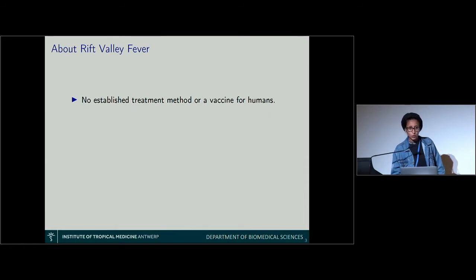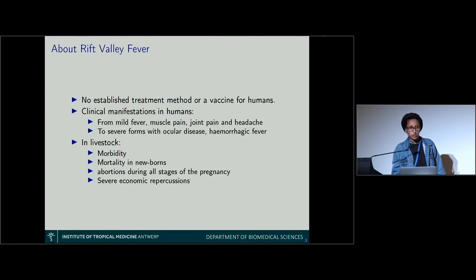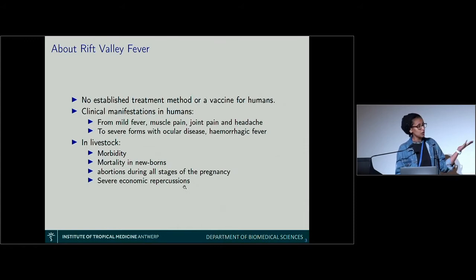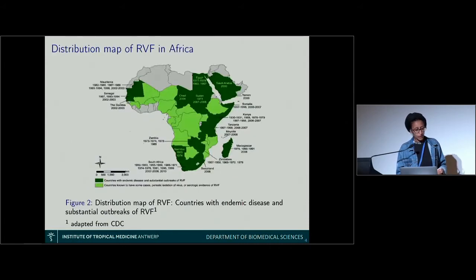Unfortunately, there is no established treatment for Rift Valley Fever and no vaccine for humans. Clinical manifestations in humans can range from very mild fever, muscle pain, joint pain, and headaches, to very severe hemorrhagic fevers. In livestock and domestic animals, there is high morbidity and mortality in newborns, a high proportion of abortions during all stages of pregnancy, and very severe economic repercussions.